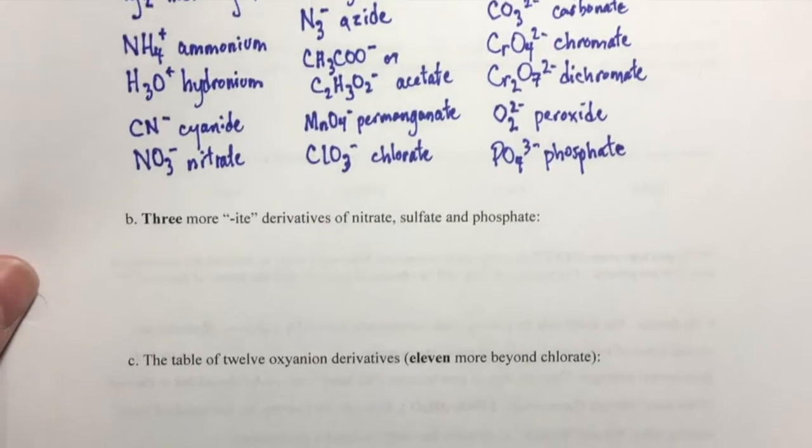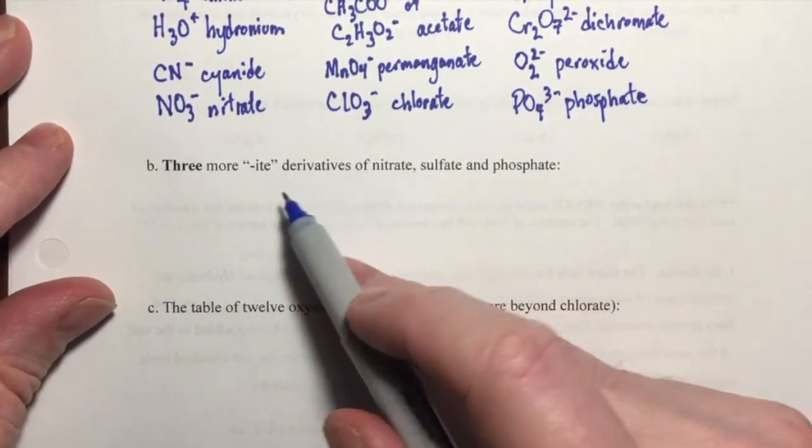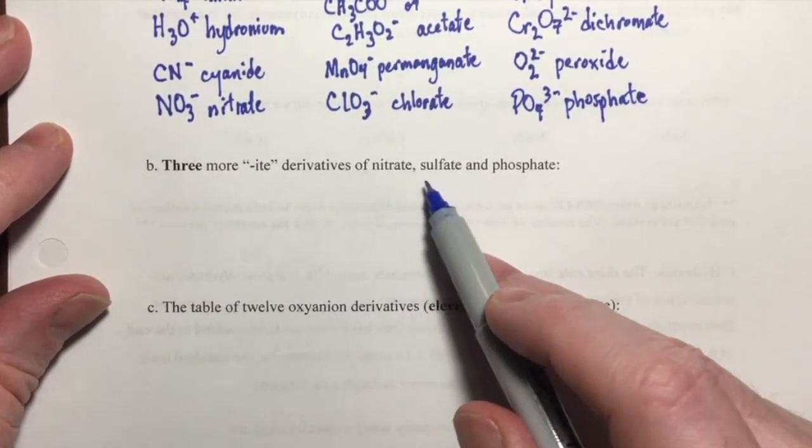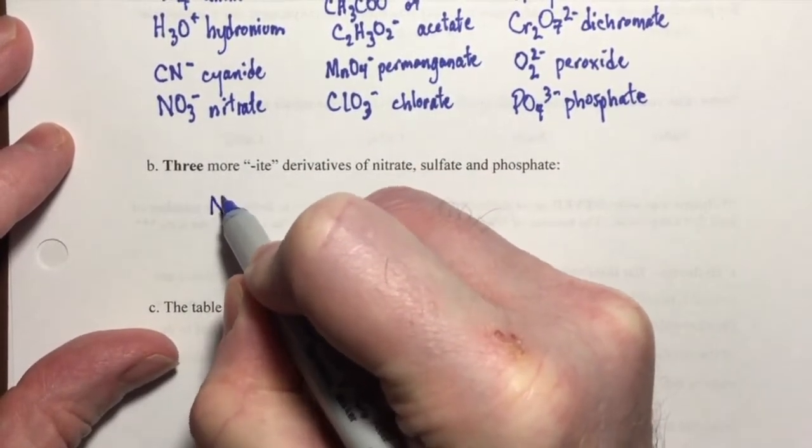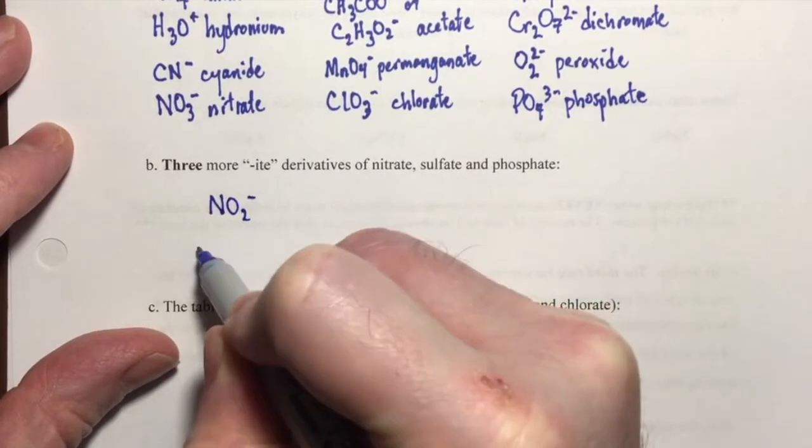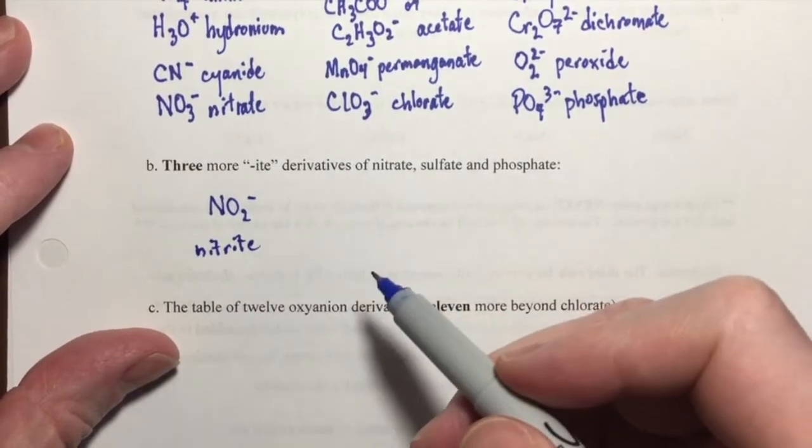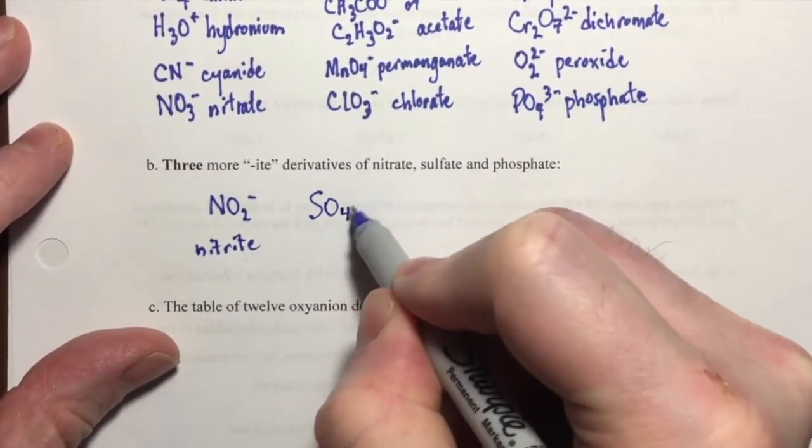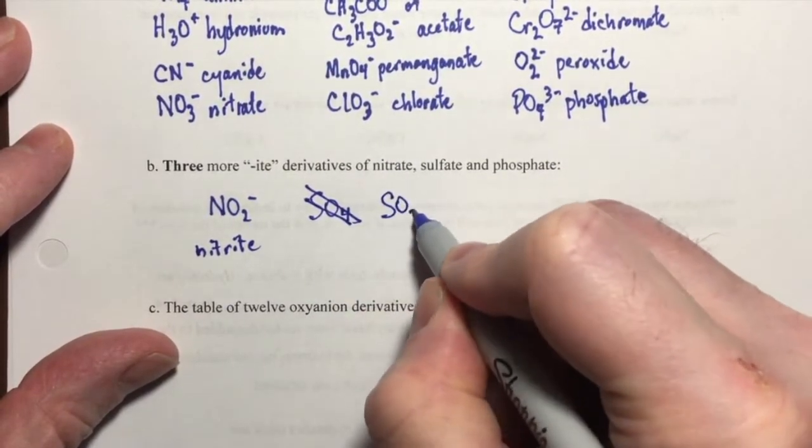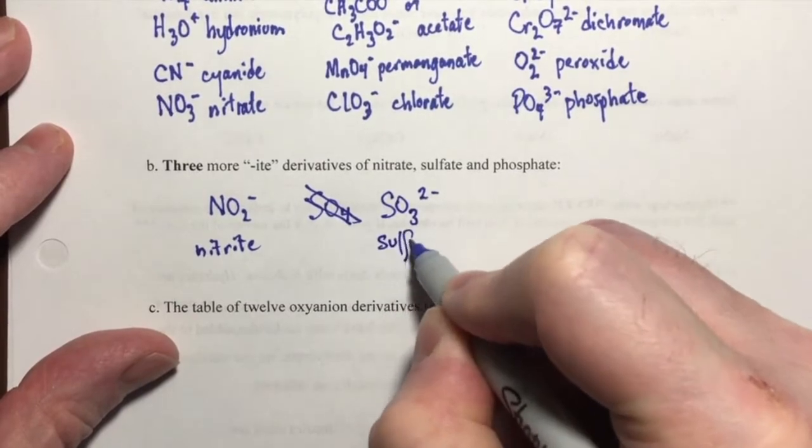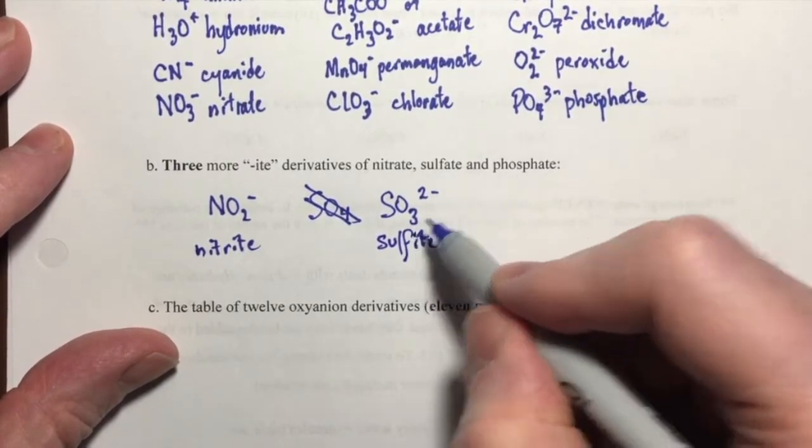To these 16 that you have to memorize, there are three more ions that we're going to add and they are the ite derivatives of nitrate, sulfate, and phosphate, which appear on the above list. That gives us nitrite, NO2 with a minus charge, sulfite, SO3 with a two minus charge, sulfite.